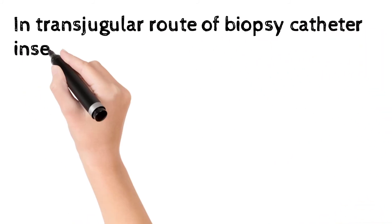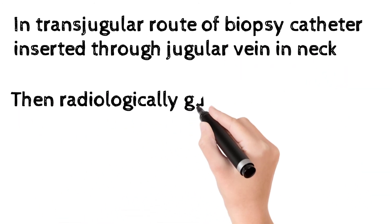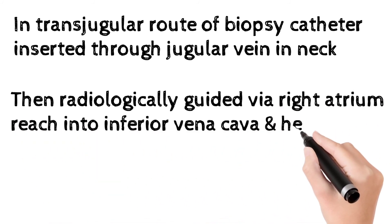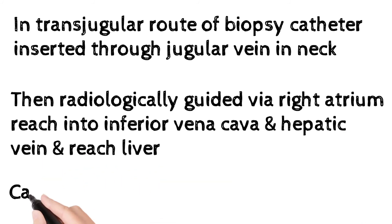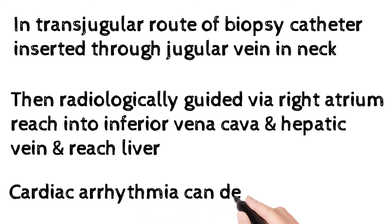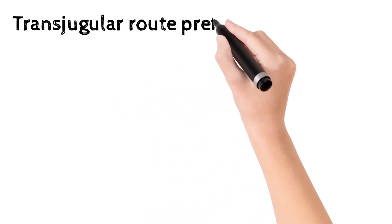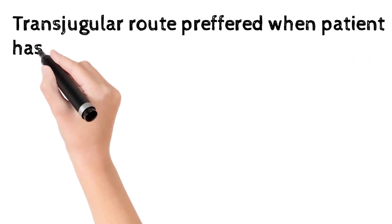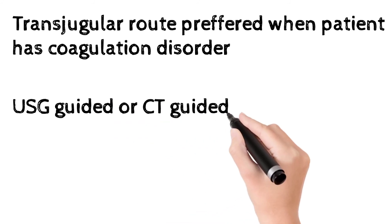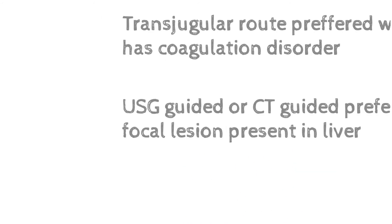In the transjugular route, a catheter is inserted into the jugular vein of the neck, then advanced radiologically via the right atrium into the inferior vena cava, then into the hepatic vein and finally into the liver. The main risk is cardiac arrhythmia, making it a very risky route. However, it is the preferred route when the patient has a coagulation disorder and percutaneous biopsy cannot be performed. Ultrasonography or CT-guided biopsy is best for focal liver lesions.